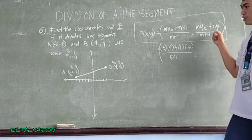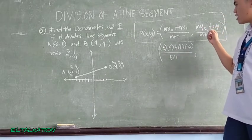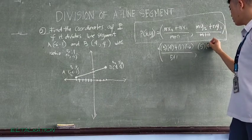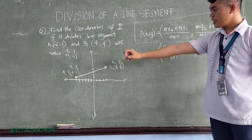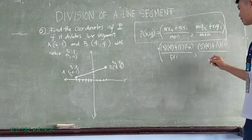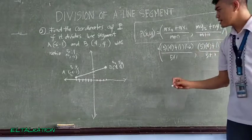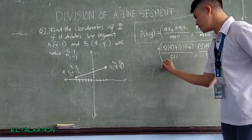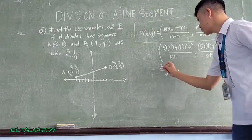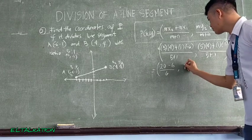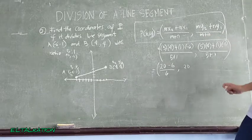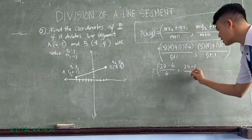Then for y, M is 5 times y sub 2 which is 4, plus N which is 1 times negative 1, all over 5 plus 1. Okay, then simplify. So we will have 5 times 4 is 20, 1 times negative 6 is negative 6, all over 6. 5 times 4 is 20, 1 times negative 1 is negative 1, all over 6.